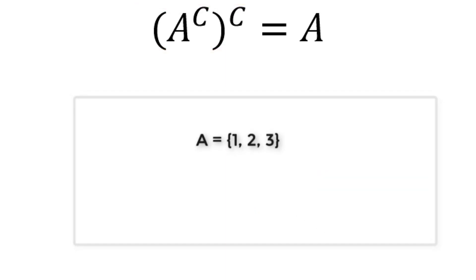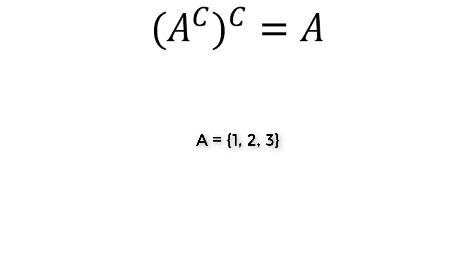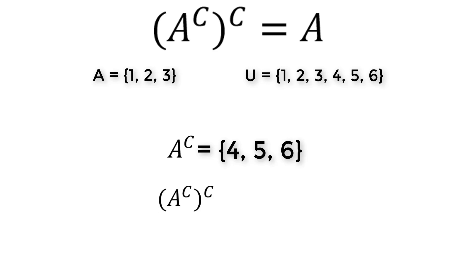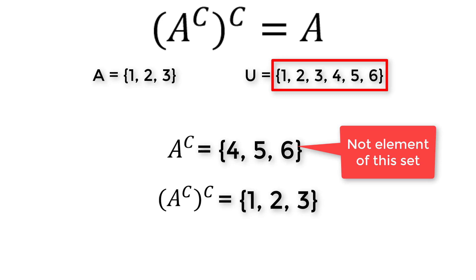Suppose A is a set of {1, 2, 3} and the elements of the universal set are {1, 2, 3, 4, 5, 6}. Then A complement is {4, 5, 6}. If we take the complement of this complement, the elements will be those in the universal set but not in A complement. Therefore, the complement of complement of A is {1, 2, 3}, which is nothing but A itself.